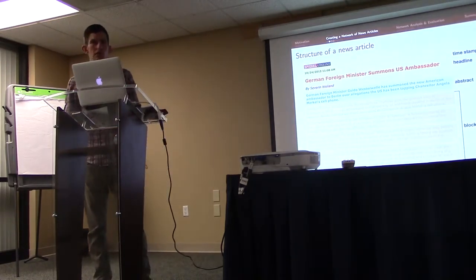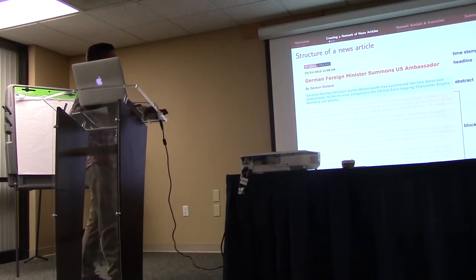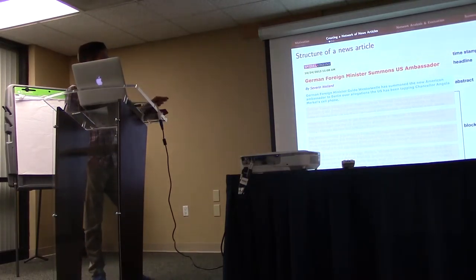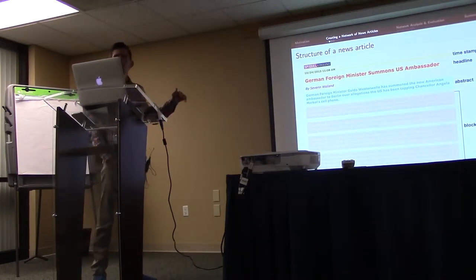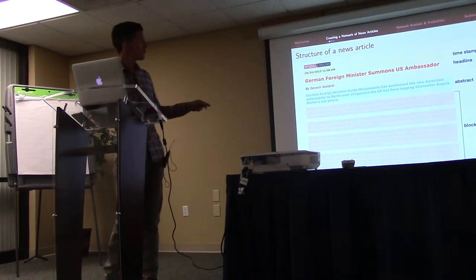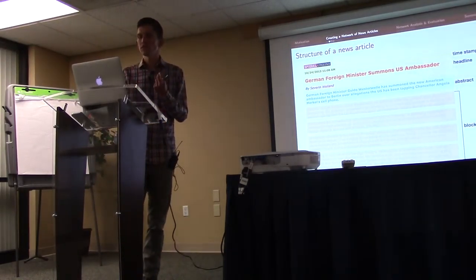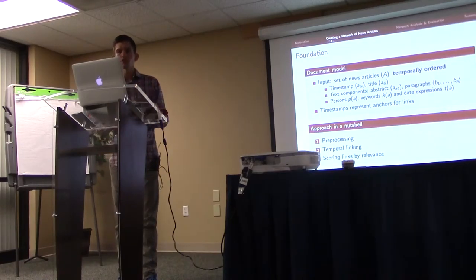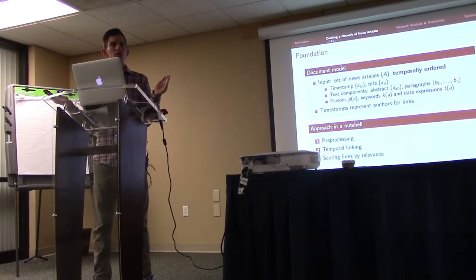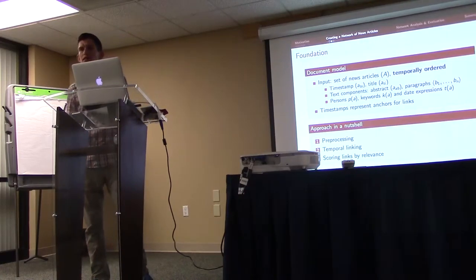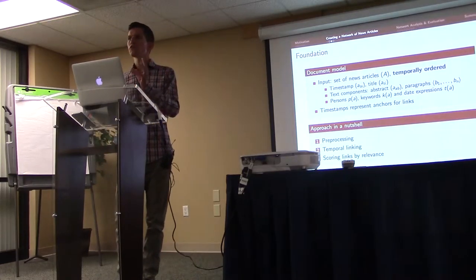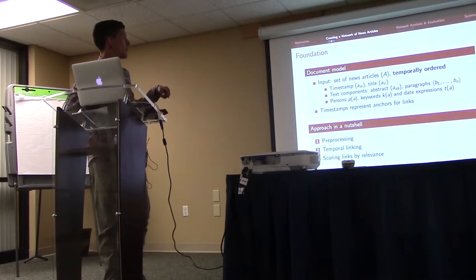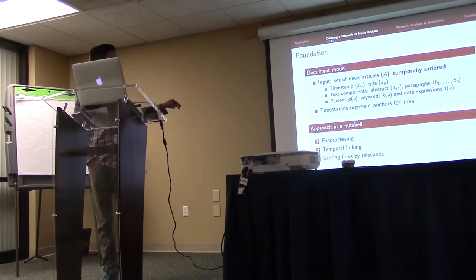To understand our approach, let's look at the typical structure of a news article. Each article consists of a timestamp when it was published, the headline, an abstract, and the blocks or paragraphs of the article. The abstract and the paragraphs contain the actual content of the article. We define our input and document model: the input for our system is a set of news articles ordered chronologically, processed one article at a time incrementally. Each article consists of a timestamp and a title as metadata, and two distinct text components — the abstract and a set of paragraphs.